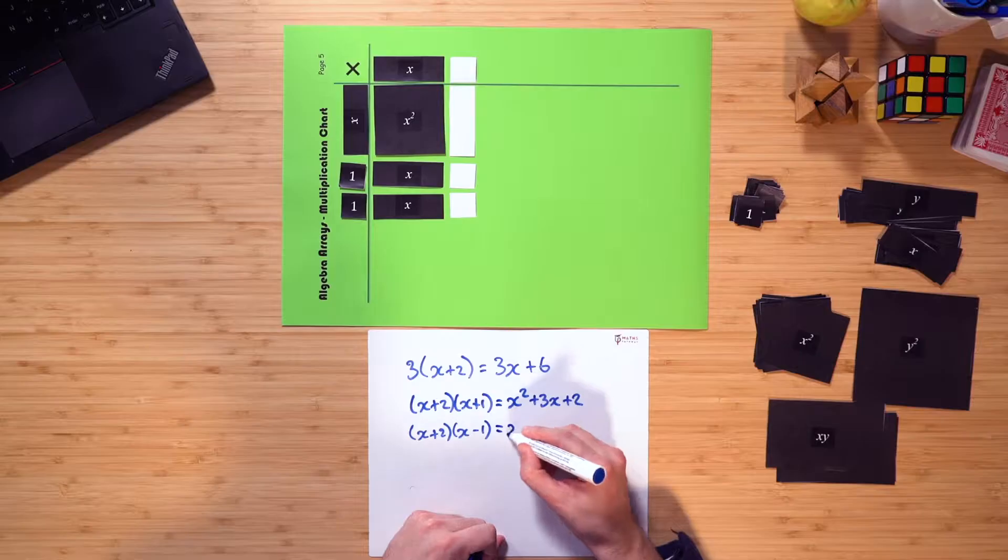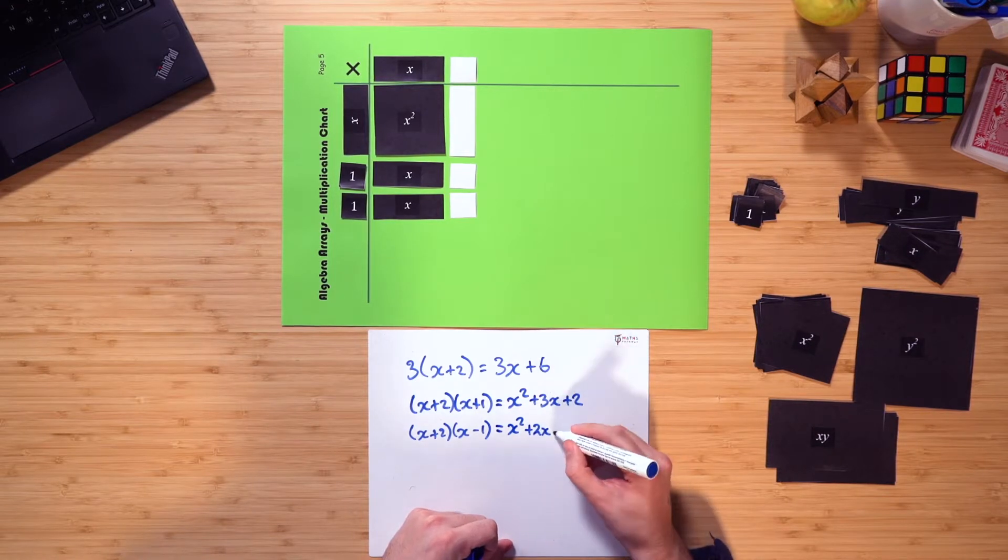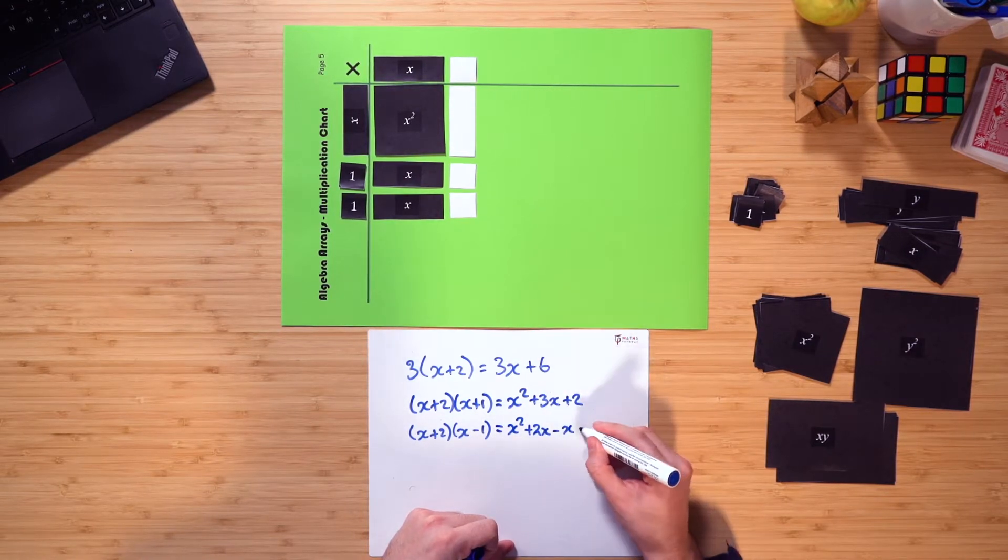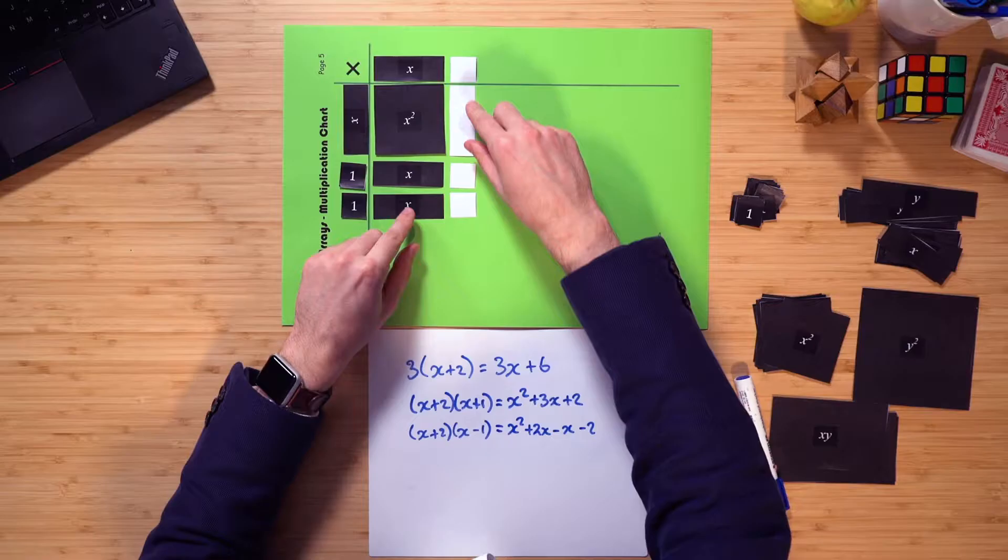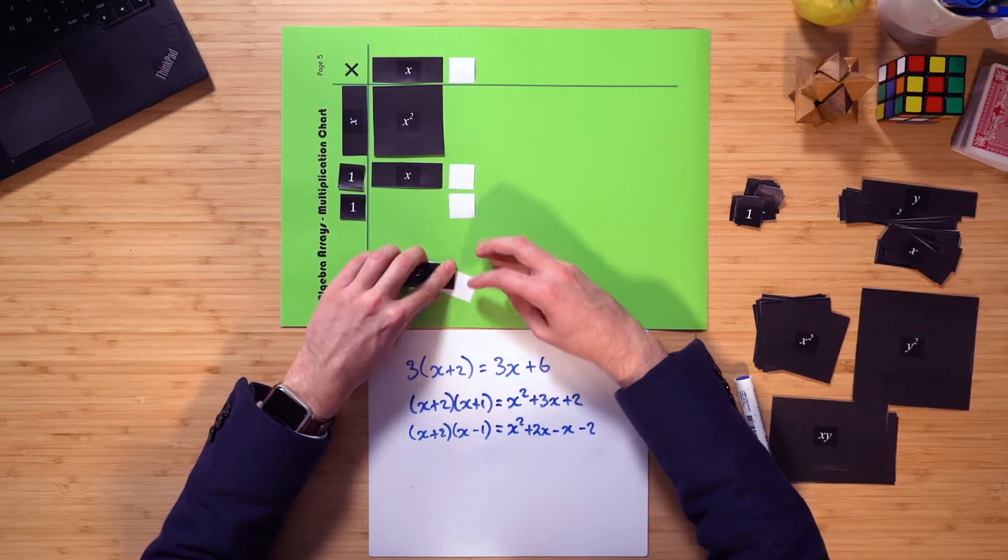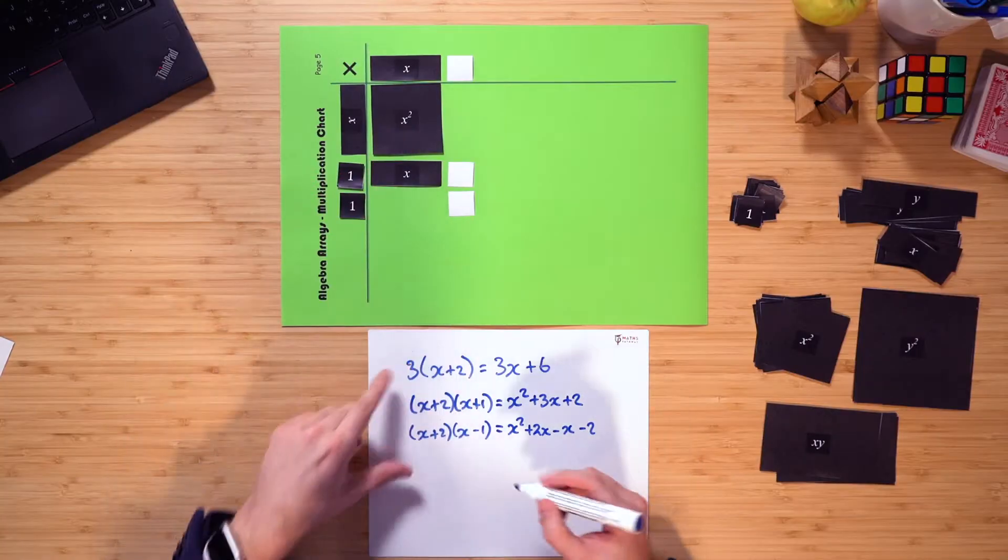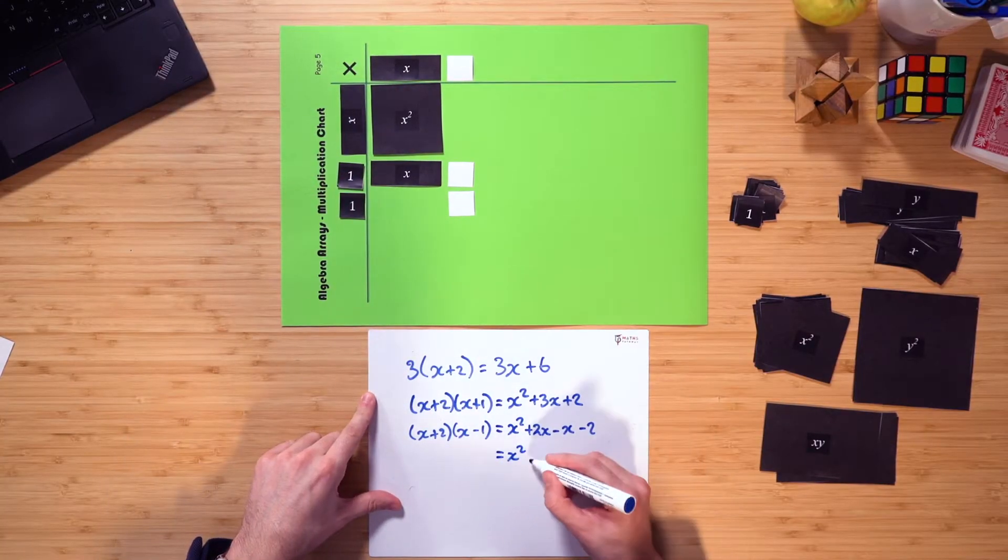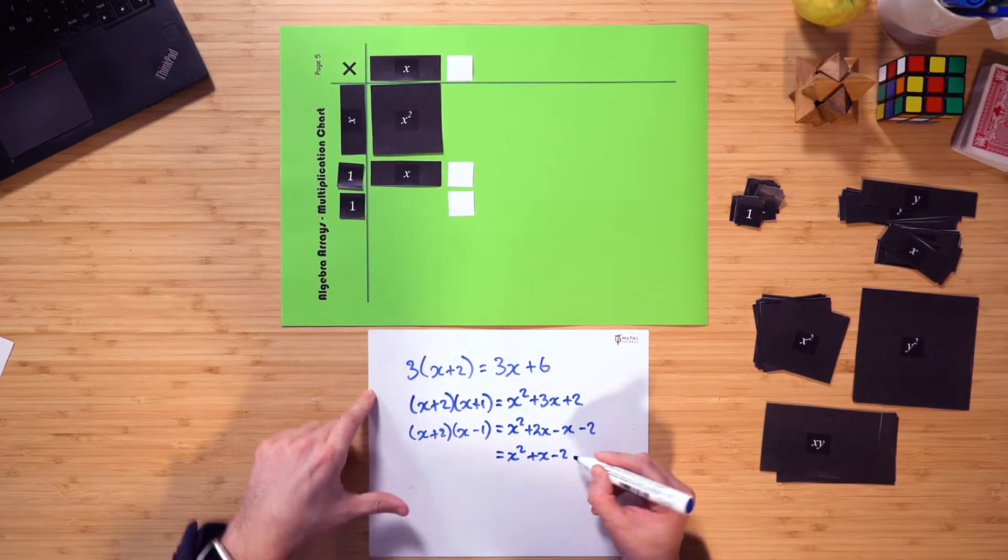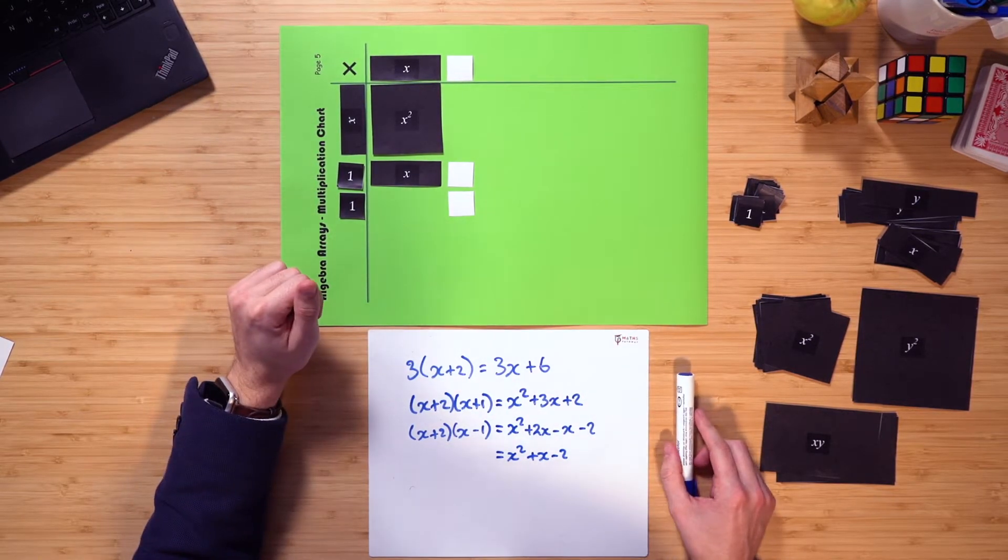So when I do this, I end up getting x squared plus 2x minus x minus 2. But here's the really cool thing. When we have a positive x and a negative x, they kind of like join together, go kaboom, and then disappear. So therefore, really what I get is x squared, a positive x, and a negative 2. So therefore, my answer is x squared plus x minus 2.